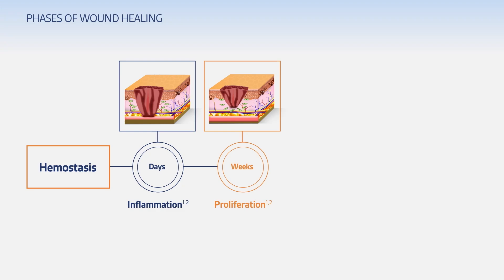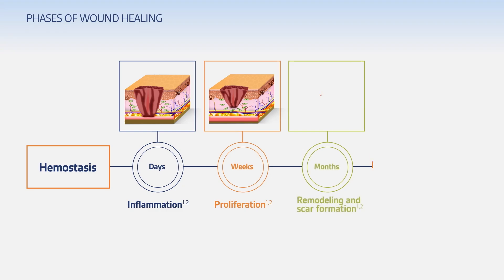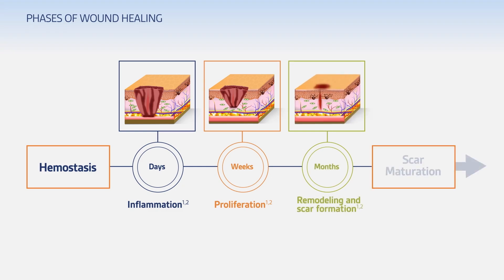Angiogenesis also begins to take place in the wound. The final phase, remodeling and scar formation, continues over the next several months as fibroblasts differentiate into myofibroblasts and begin the wound contraction process that leads to scarring.